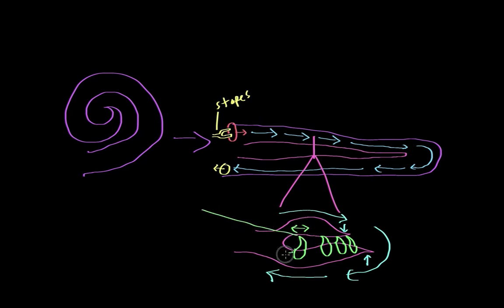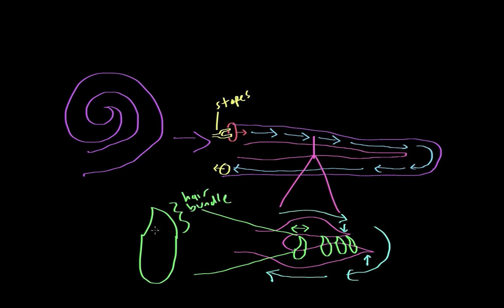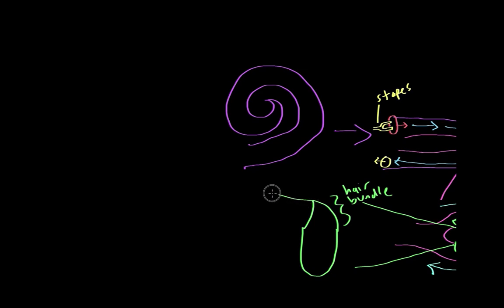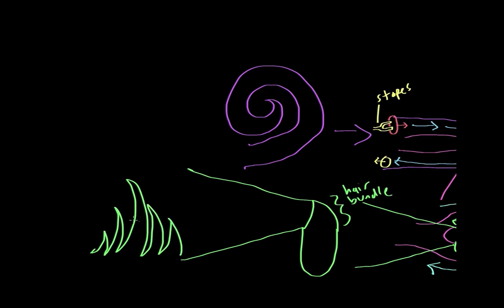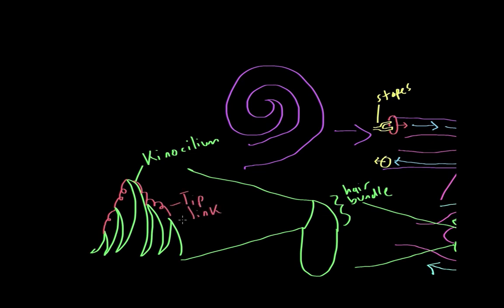We can zoom in on these hair cells to look at them in more detail. The shark fin part is called the hair bundle. These aren't actually hairs — they're a bunch of little filaments, each one called a kinocilium. A whole bunch of these filaments are attached to one another and form the hair bundle. Each kinocilium is connected to the others by a little spring-like structure called a tip link, which links the tips of the kinocilia.